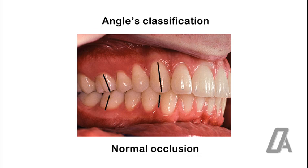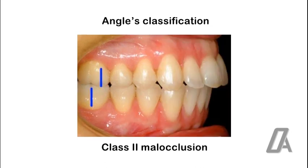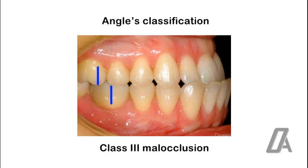Based on Angle's classification, it has four classes, starting with normal occlusion, class 1 malocclusion, class 2 malocclusion, and class 3 malocclusion.